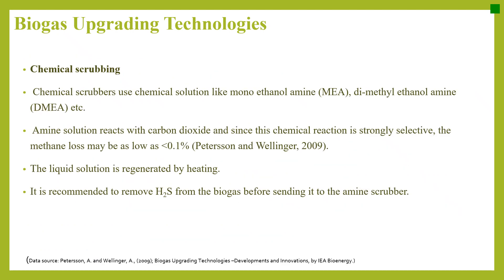Chemical scrubbing uses chemical solutions like monoethanolamine (MEA) or dimethylethanolamine. The amine solution reacts with carbon dioxide, and since this chemical reaction is strongly selective, methane loss may be as low as less than 0.1%. The liquid solution is regenerated by heating, and it is recommended to remove H2S from the biogas before sending it to the amine scrubber.